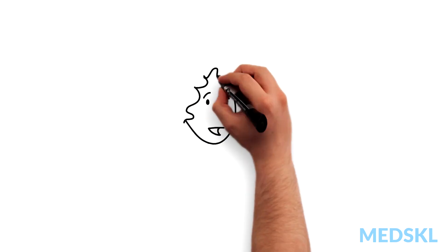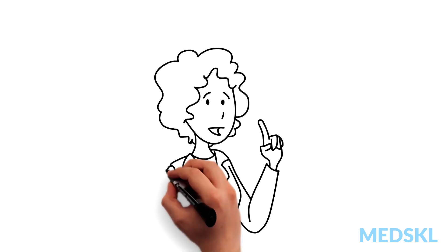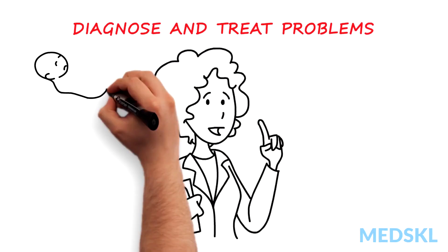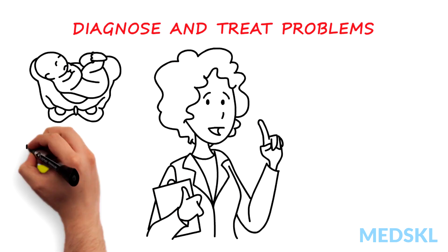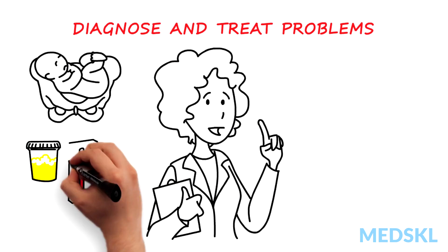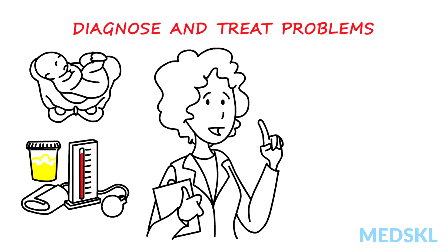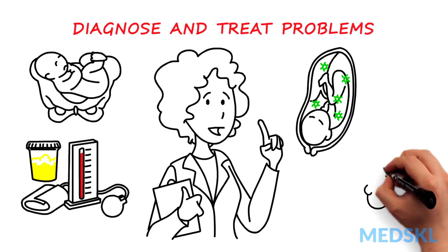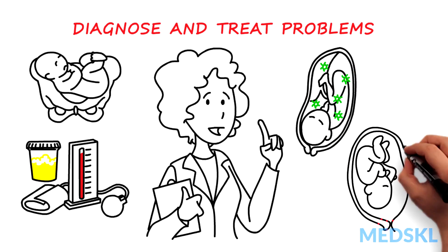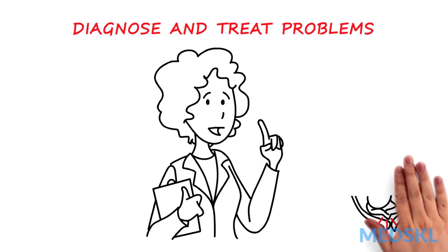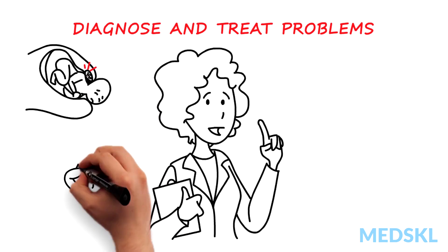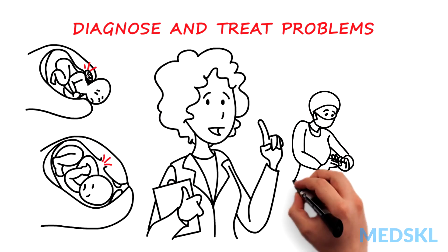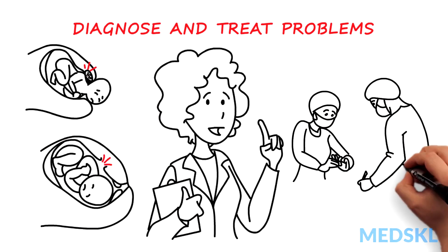During labor and delivery, clinicians must be able to diagnose and treat problems such as labor dystocia and any obstetrical emergencies such as preeclampsia, chorioamnionitis, cord prolapse, shoulder dystocia, and uterine rupture, and decide on the need for cesarean section.